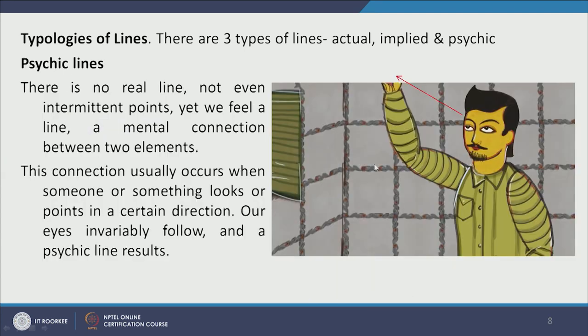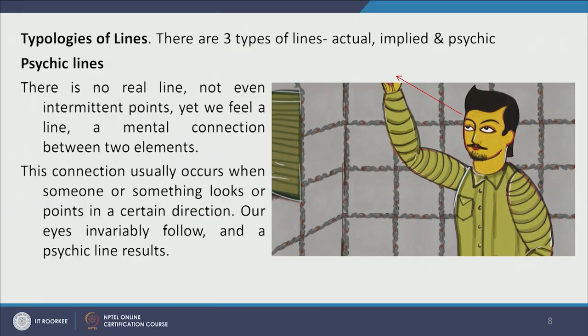The third type of line is psychic lines. Psychic lines are implied — there is no existence of a line, no point — but the composition creates a movement of the user's eye, and the user psychologically follows a line that does not exist in the picture. In this picture, the person is looking at his hand, and the red line depicts the implied line of the user's eye movement.